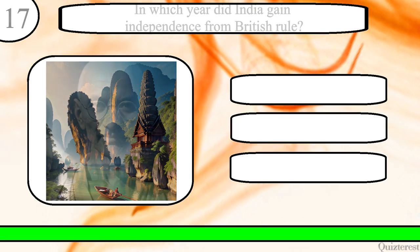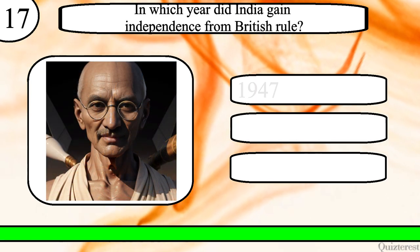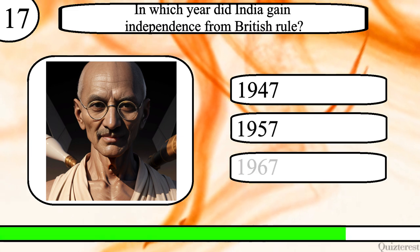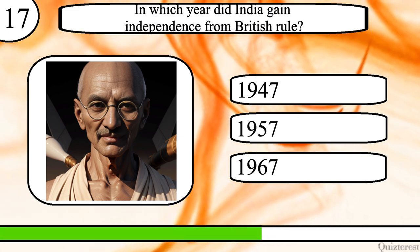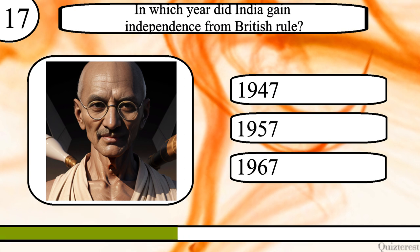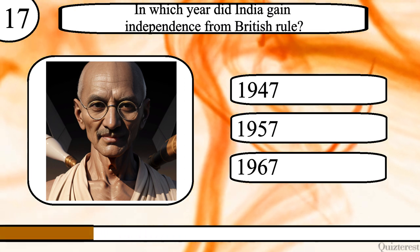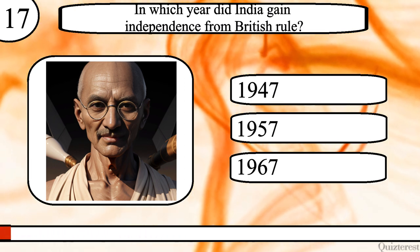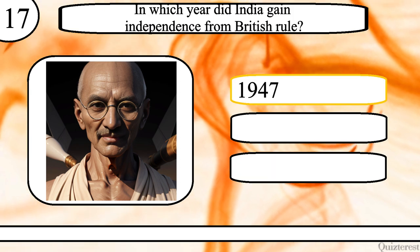Question 17. In which year did India gain independence from British rule? 1947, 1957 or 1967? The correct answer is 1947.